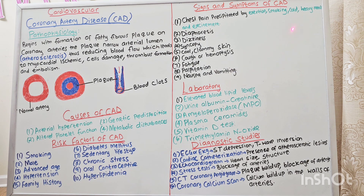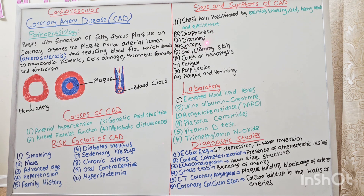What are the signs of CAD? Chest pain, which is mostly precipitated by exhaustion, smoking, cold, eating heavy meals, and excitement. Diaphoresis, dizziness, syncope, cool clammy skin, cough or hemoptysis — that is coughing out blood — fatigue, palpitation, nausea, and vomiting.